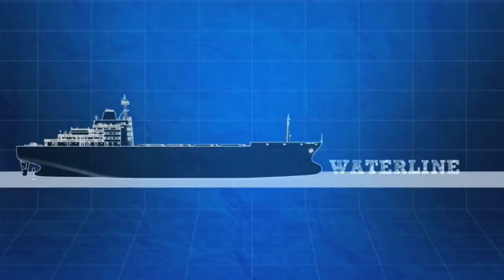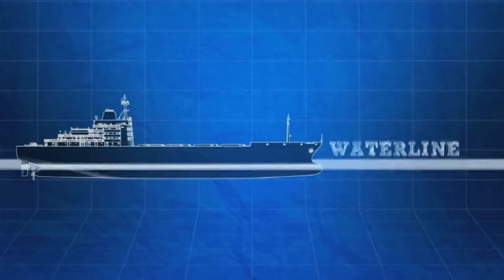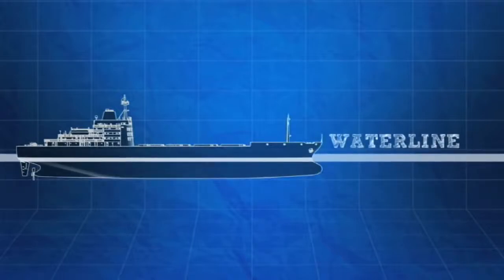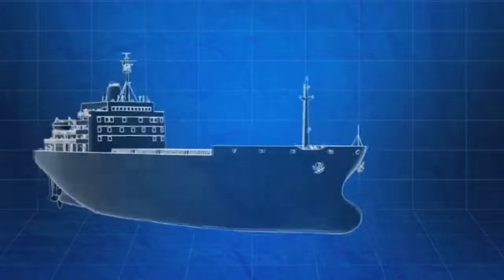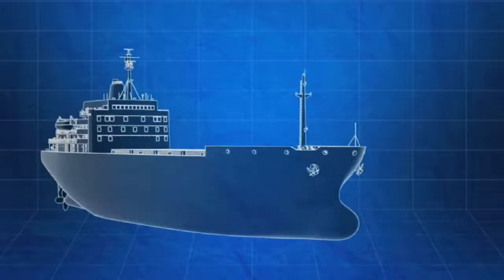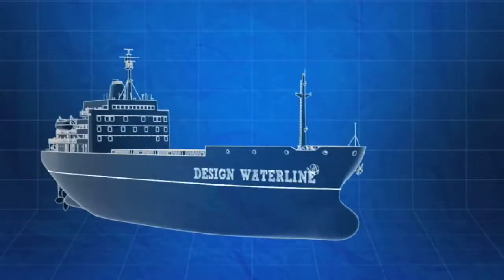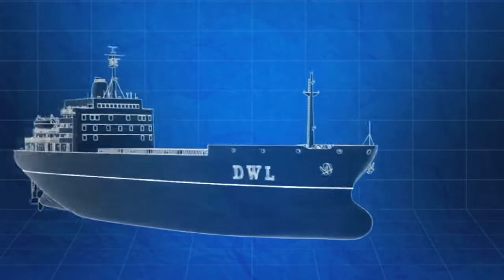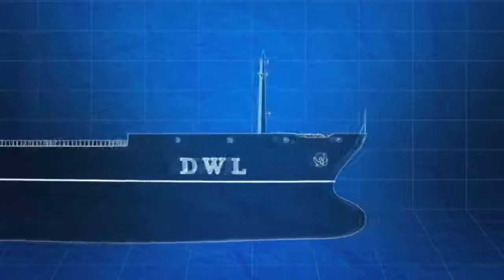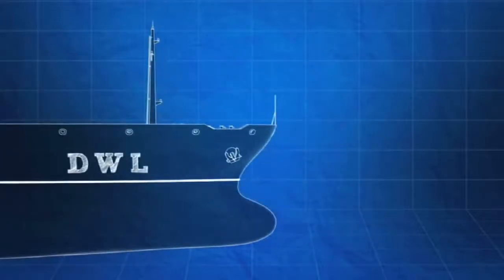The waterline is the intersection of the surface of the water a ship is floating in with the sides of the ship's hull. When a ship is designed, the naval architect determines the design waterline, or DWL, which represents the waterline of a ship under full load or maximum draft conditions on an even keel.